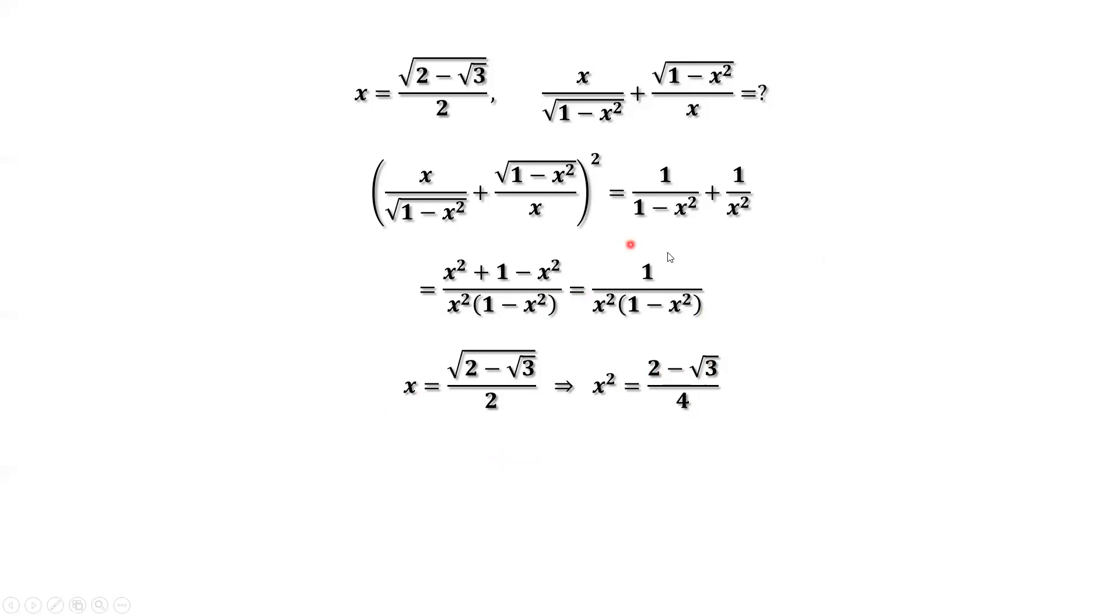From this expression, in addition to having x squared, we also need 1 minus x squared. 1 minus x squared equals 1 minus 2 minus square root of 3 over 4. We simplify this part. We have 2 plus square root of 3 over 4.